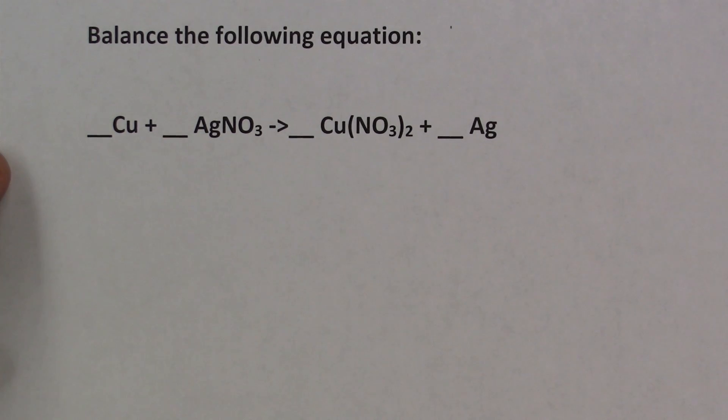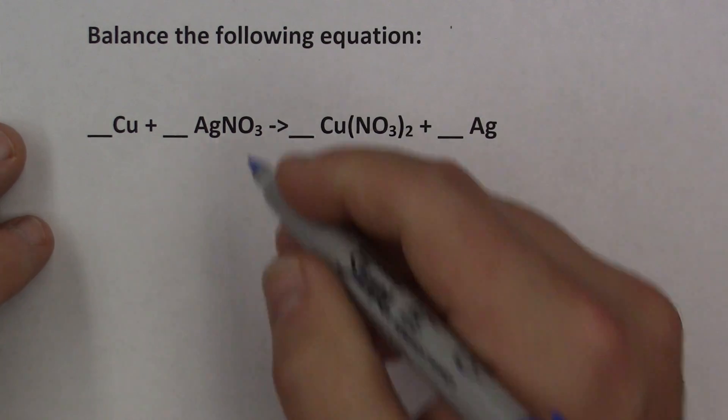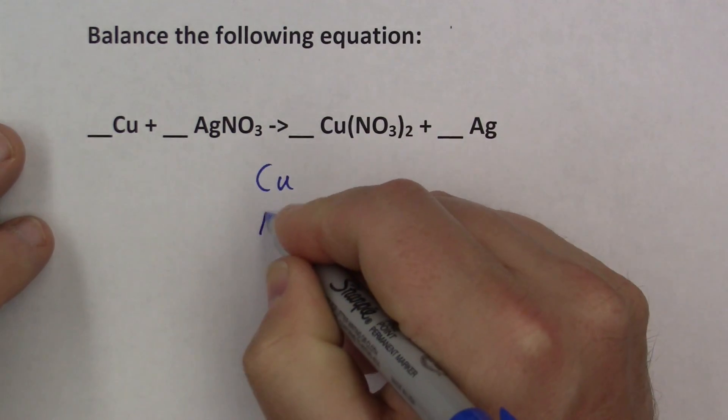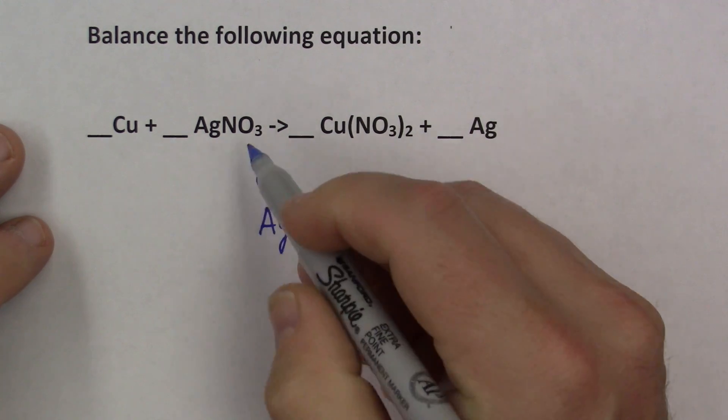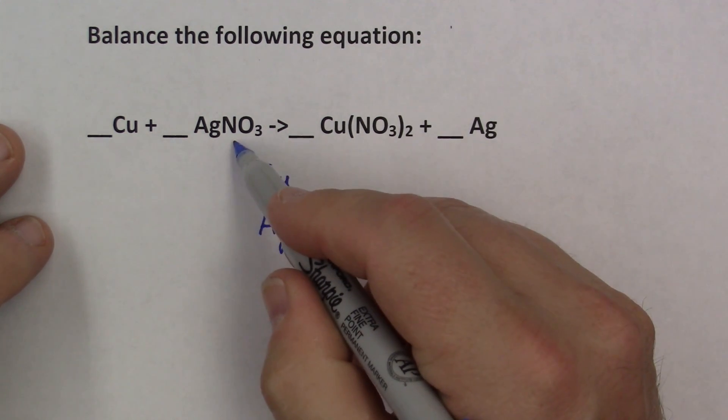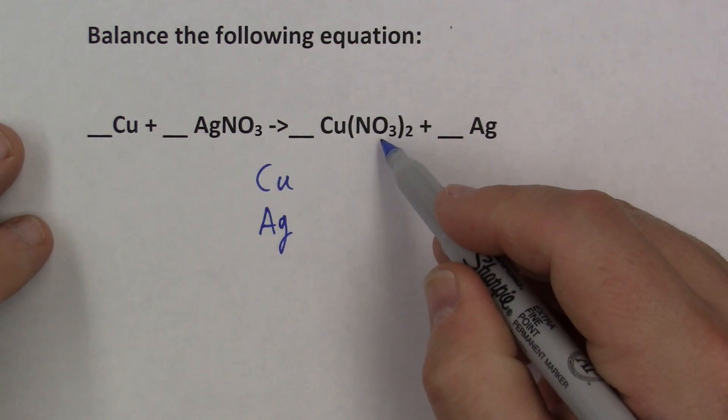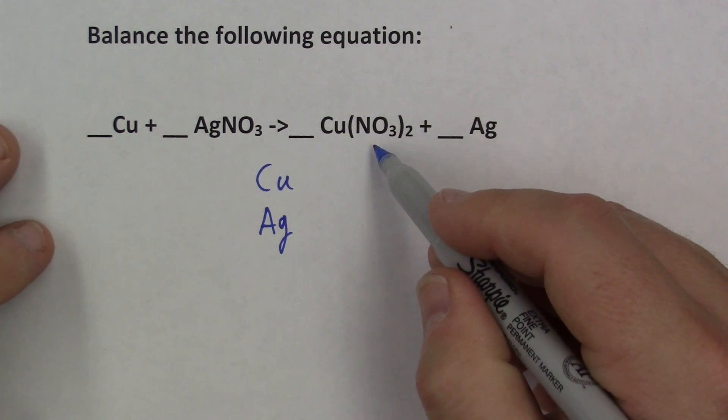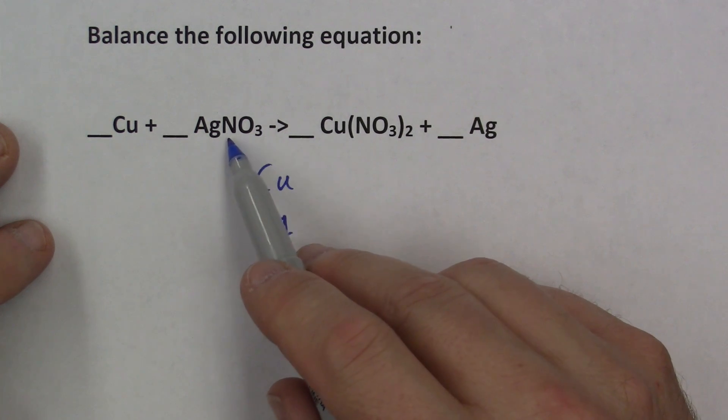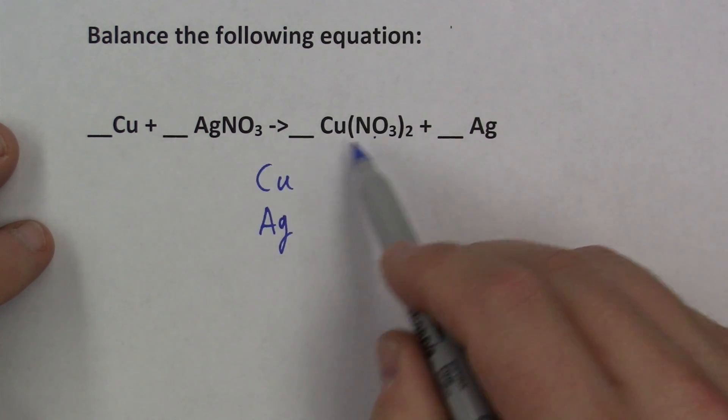Here's another example of balancing equations. This equation is obviously a little bit more complicated. But we're going to have the same approach as we did for the easier example. Let's just write the atoms that we have down the center. Now, here's a case where we have NO3 on the left and NO3 on the right. These are called polyatomic ions. And when you see these in a chemical reaction and you're trying to balance the equation, verify that the same polyatomic is on the left as is on the right.